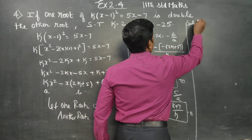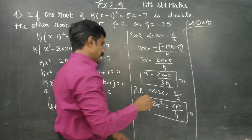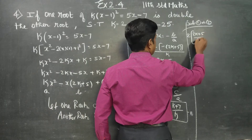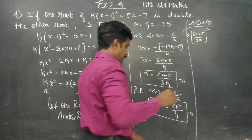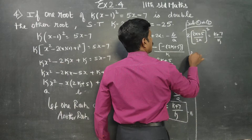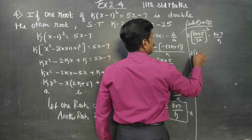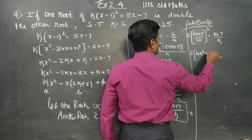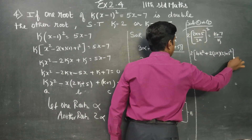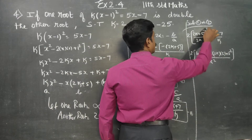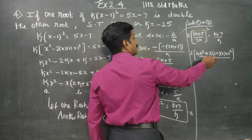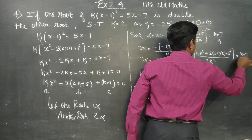Substituting equation 1 into equation 2: 2 times 2k plus 5 by 3k, whole square, is equal to k plus 7 by k. Expanding the square: 2 times a plus b whole square gives a square plus 2ab plus b square. That is 2k squared plus 2 into 2k into 5 plus 5 square, divided by 9k square, is equal to k plus 7 by k.